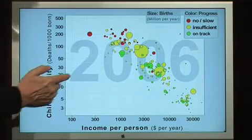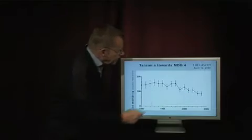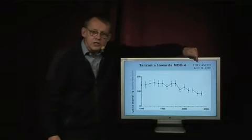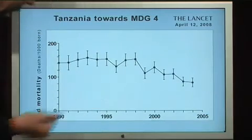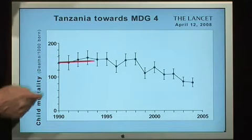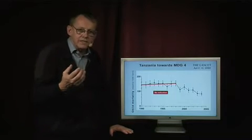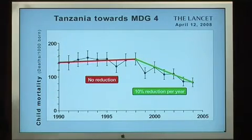Now there is good news. Look at Tanzania — according to measurement from 1990, it has had insufficient reduction. But a more detailed study published in The Lancet in April this year shows that during the first nine years of Millennium Development Goal measurements, Tanzania did not reduce at all — it was a red country. But what has happened is this: now they have a fast reduction.